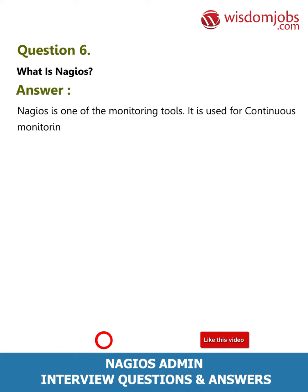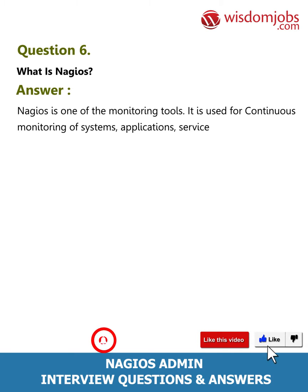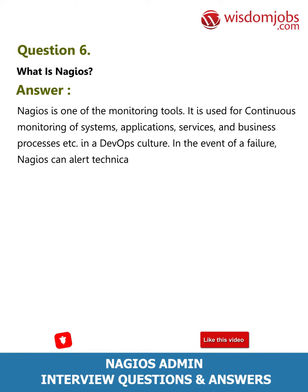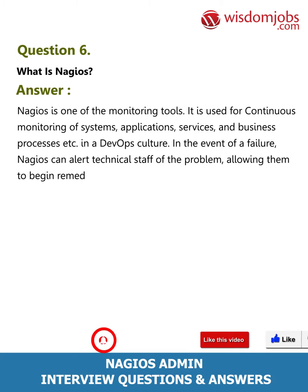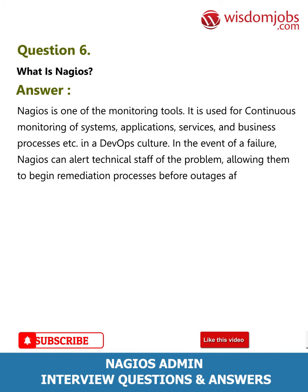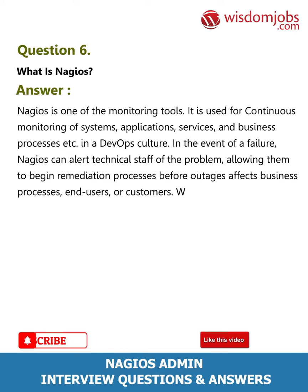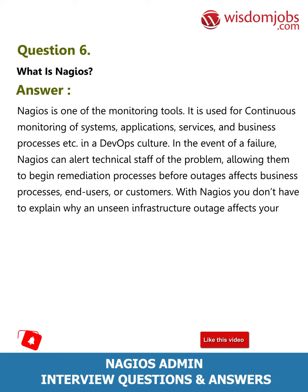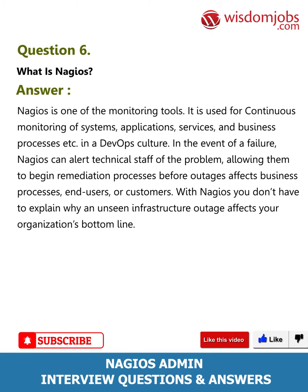Question 6: What is Nagios? Answer: Nagios is one of the monitoring tools. It is used for continuous monitoring of systems, applications, services, and business processes in a DevOps culture. In the event of a failure, Nagios can alert technical staff of the problem, allowing them to begin remediation processes before outages affect business processes, end users, or customers. With Nagios, you don't have to explain why an unseen infrastructure outage affects your organization's bottom line.